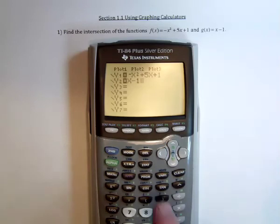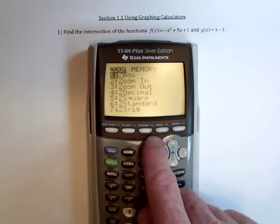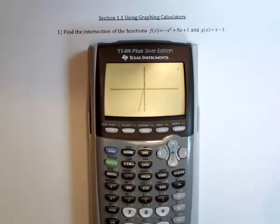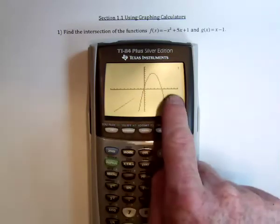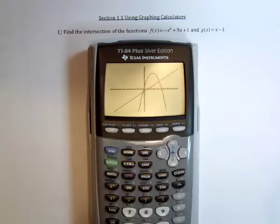A good place to start when graphing is go to zoom, number 6, standard. Standard means that x and y are going to range from negative 10 to positive 10. The y's also will range from negative 10 to positive 10.